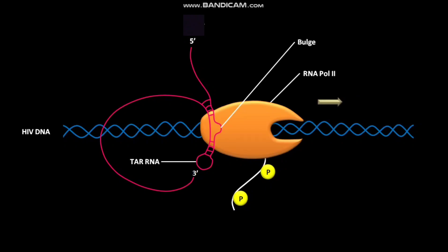The TAR RNA has two binding sites. One binding site binds to the HIV TART protein. TART is a sequence-specific RNA binding protein.